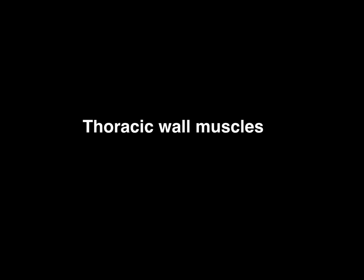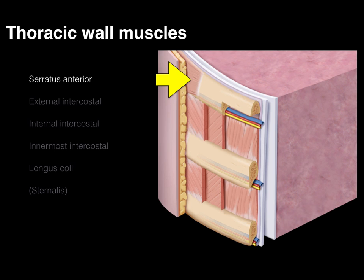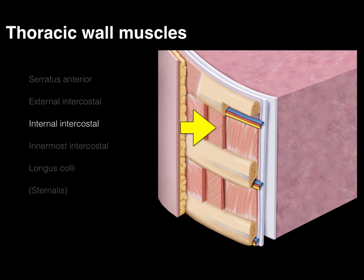So thoracic wall muscles now in a step dissection. Here we have our serratus anterior, external intercostal, internal intercostal, and innermost intercostal. We're going to focus on just the first four. There's our serratus anterior superficial to the ribs, then the external intercostal, then the internal intercostal, and then the innermost intercostal.